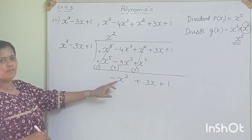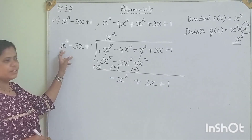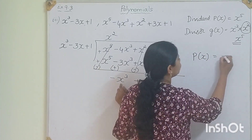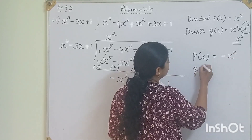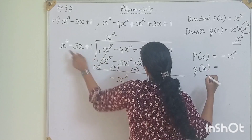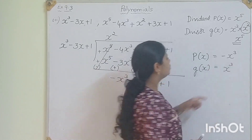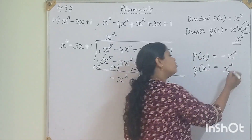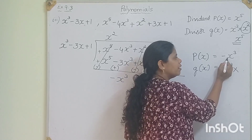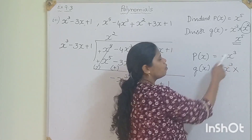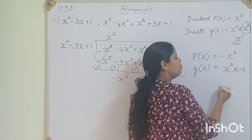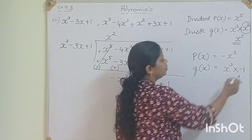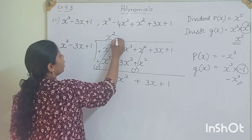We compare again. The first term of the dividend is now minus x cubed, and the first term of the divisor is x cubed — the degree is the same, so we can divide. To get minus x cubed, we multiply by minus 1. So we write minus 1 in the quotient.